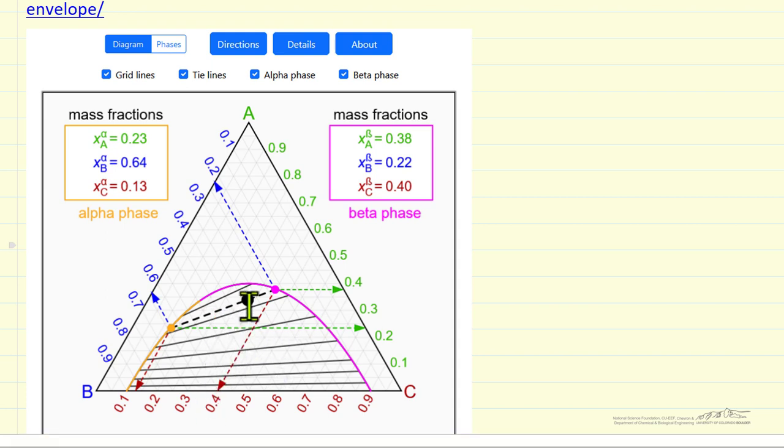For example, for the point indicated by this black dot, that point consists of two phases: one with this overall mass fraction composition, the other purple point with this overall mass fraction composition.